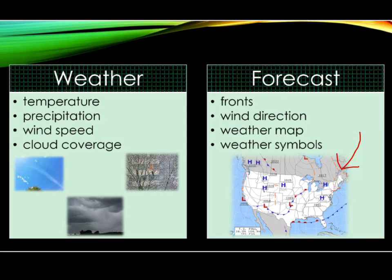Weather maps are used to summarize weather conditions. Meteorologists around the world use similar symbols to represent the same things, which allows them to communicate with one another more clearly. This also creates a consistent system that allows anyone looking at a weather map to understand what is shown.